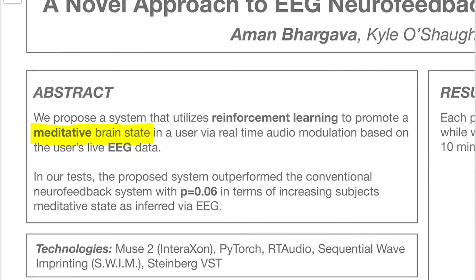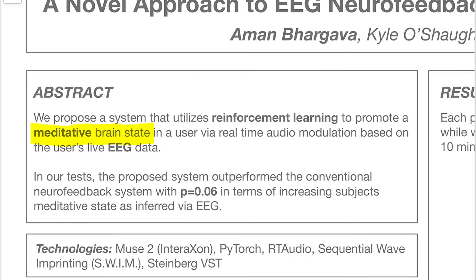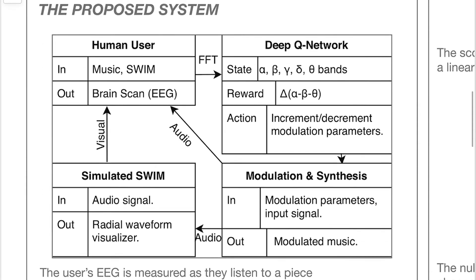To provide a bit more detail on the proposed system: the human user listens to audio while viewing a visualization of that audio while attempting to meditate. Their EEG is simultaneously measured, and the audio is modulated by a low frequency oscillator envelope function on the gain. The frequency of that low frequency oscillation is controlled by the deep reinforcement learning agent.